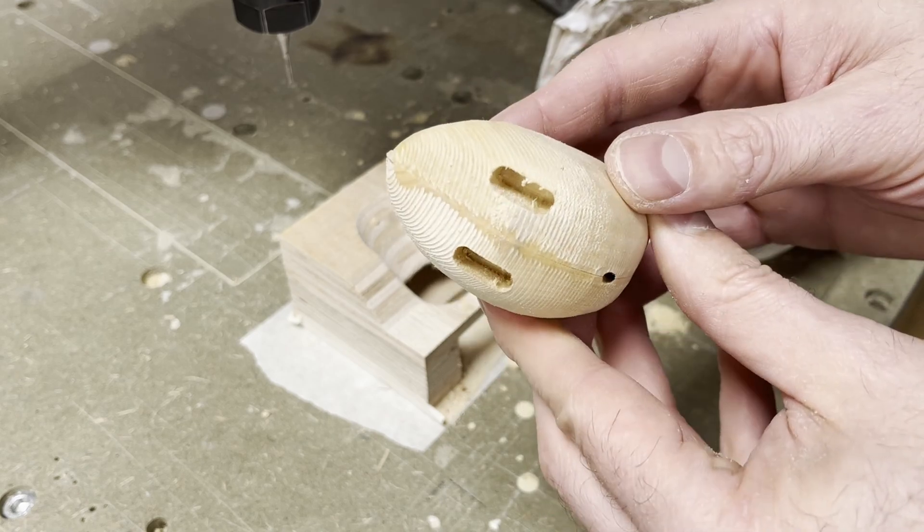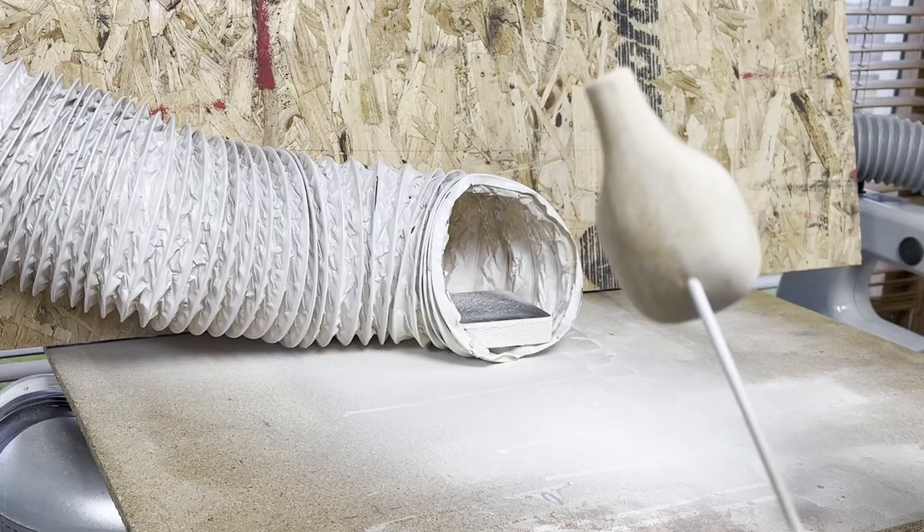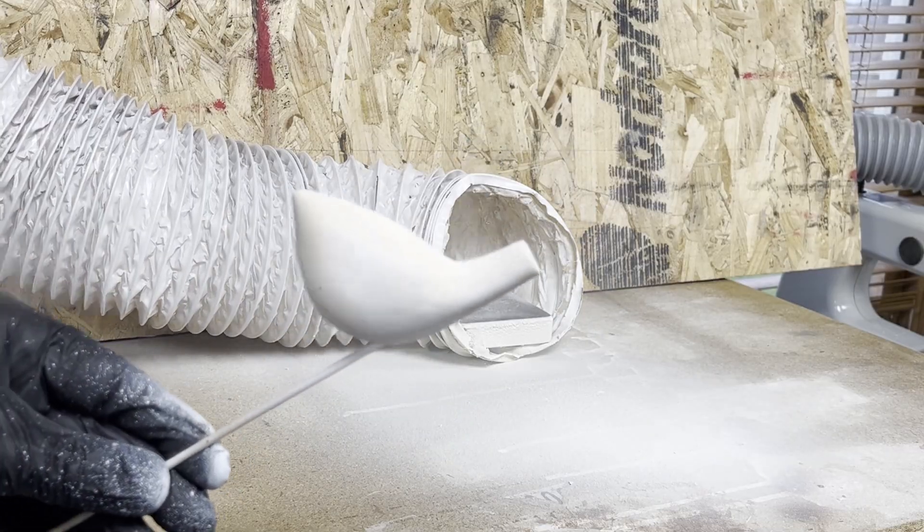After that the whole piece gets a final sanding to remove any machining marks, followed by three or four coats of primer with sanding between each layer.